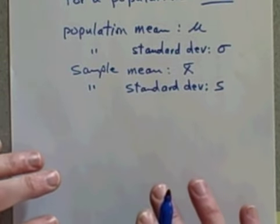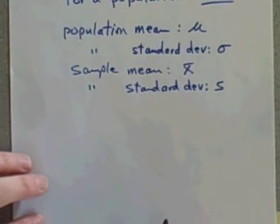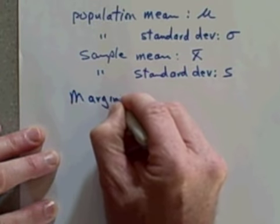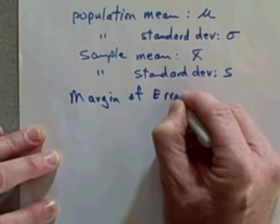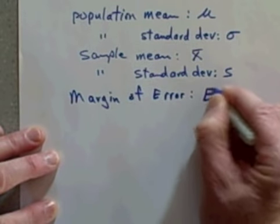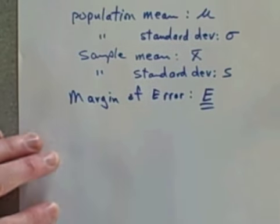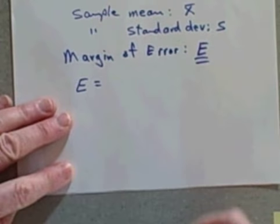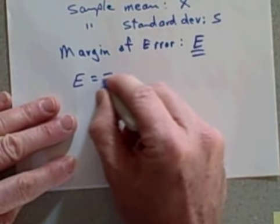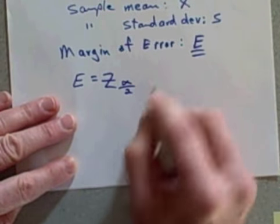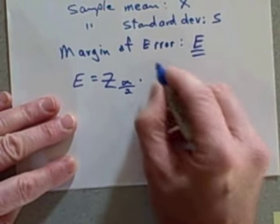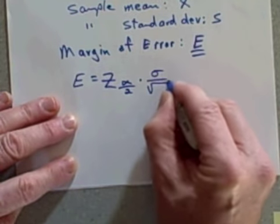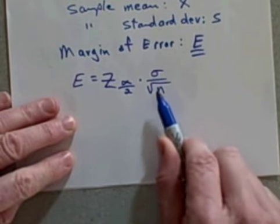We know that in order to form a confidence interval, we have to first come up with the margin of error. The margin of error is represented by just the letter uppercase E. Our formula to find the margin of error is E equals z sub α/2 (a critical value).